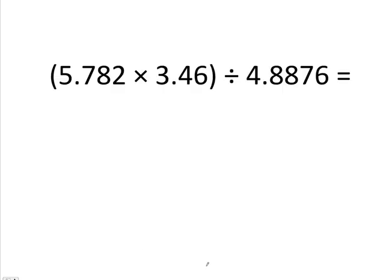Let's try another example — now would be a good time to pause this tutorial and try the problem on your own. When we multiply 5.782 times 3.46 and then divide by 4.8876, we see that 5.782 has four significant figures, 3.46 has three significant figures, and 4.8876 has five significant figures. Following our rules for multiplication and division, we keep the number of significant figures equal to that of the original number with the lowest count. So we need three significant figures in our final answer, giving us 4.09.